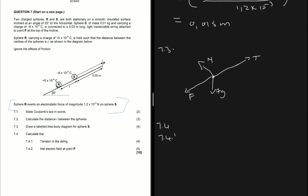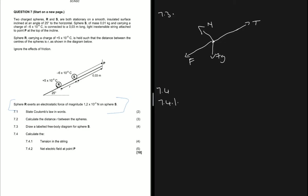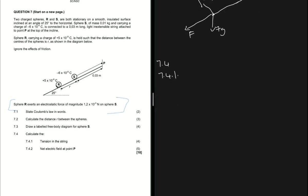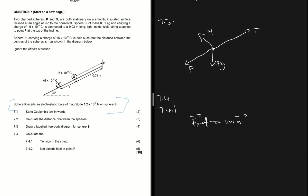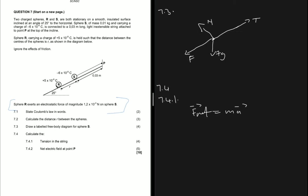7.4.1 asks us to calculate the tension in the string. When asked to find tension, the first thing I go to is F_net = ma. The spheres are stationary, so F_net equals zero, meaning acceleration is zero.